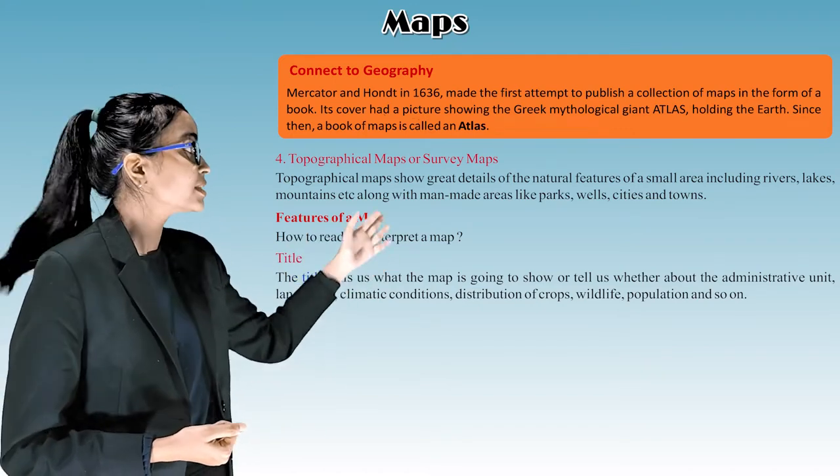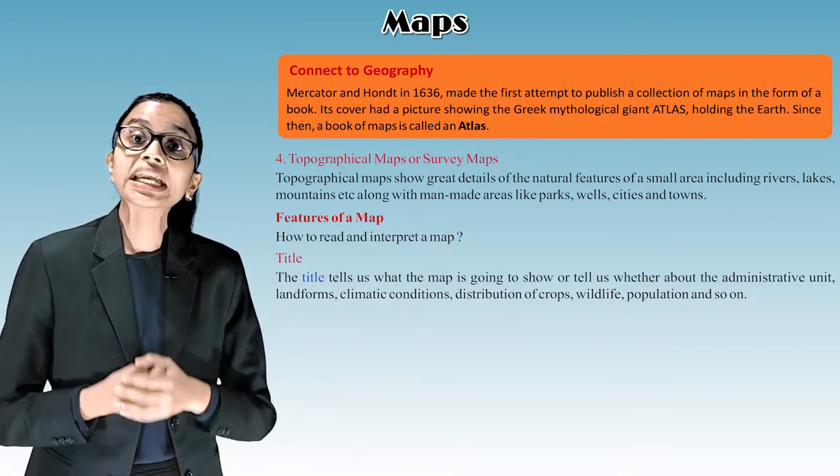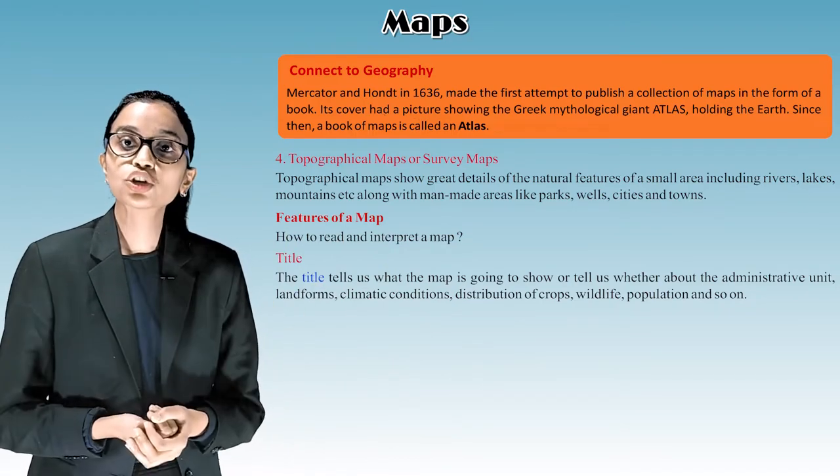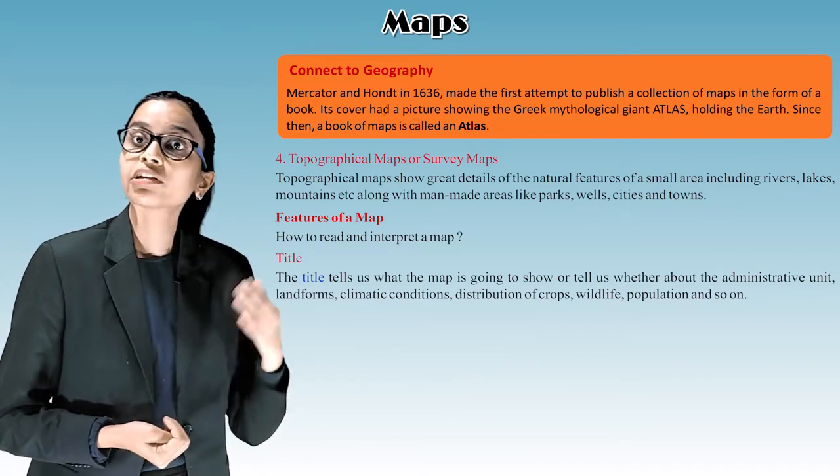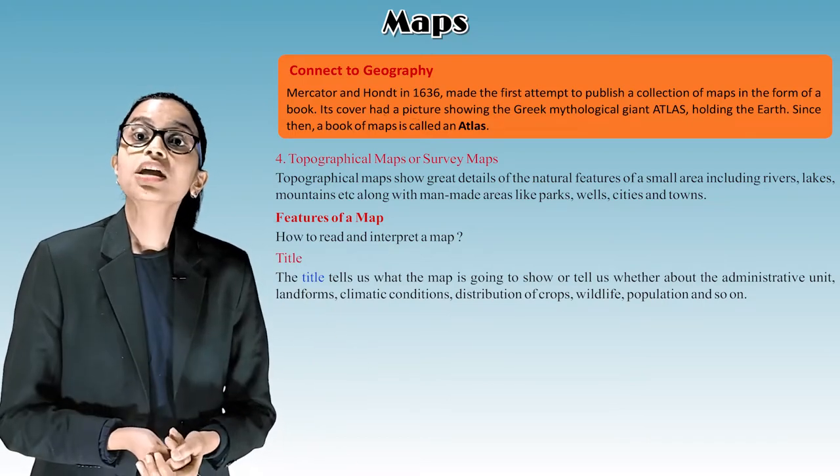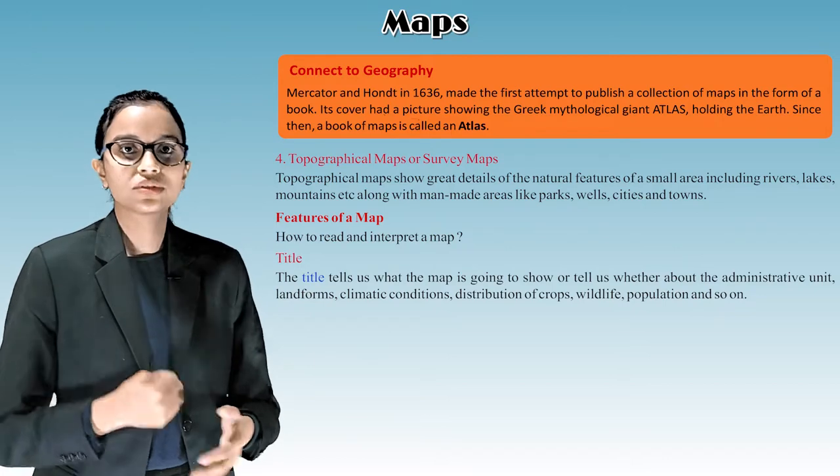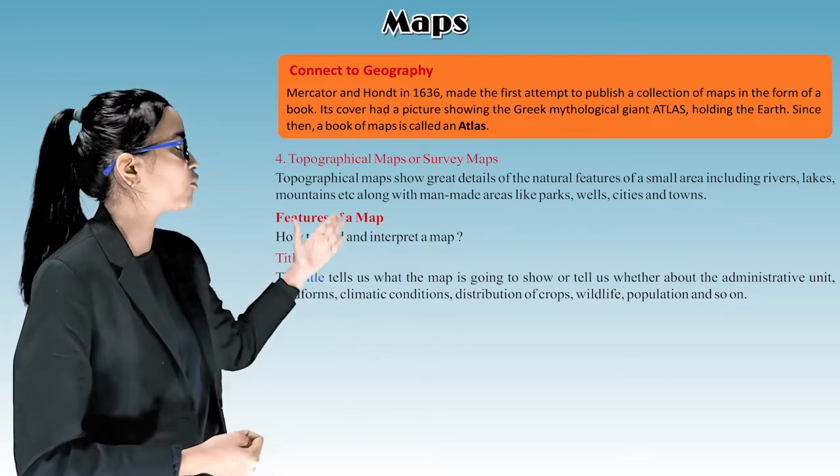Topographical maps show great details of the natural features of a small area including rivers, lakes, mountains, etc., along with man-made areas like parks, wells, cities and towns.